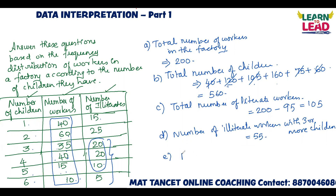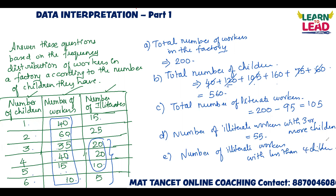Next: number of illiterate workers with less than four children. For less than four children, it is enough to add the one, two, and three columns. 15 plus 25 is 40. 40 plus 20 is 60. So 60 is your answer. Hope you got some basic ideas on how to approach a table-type question.